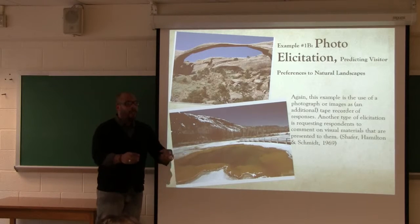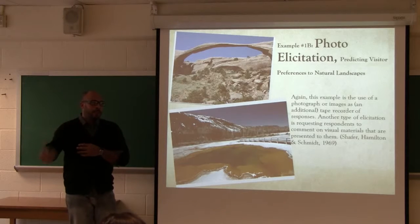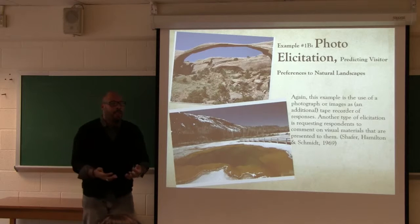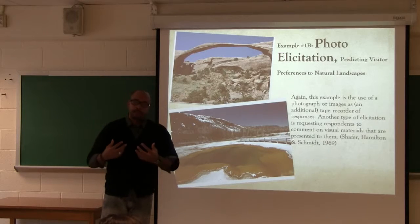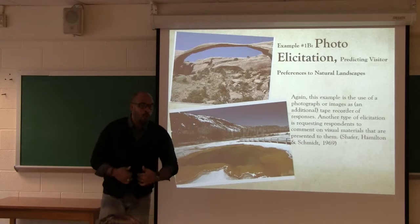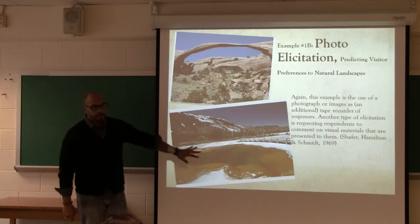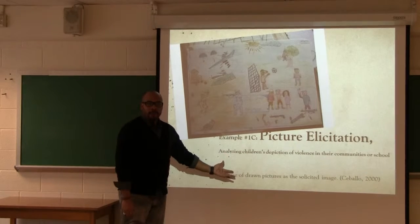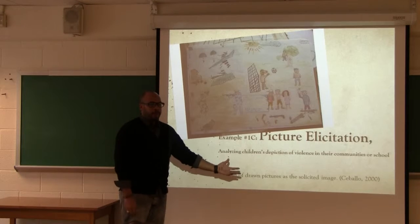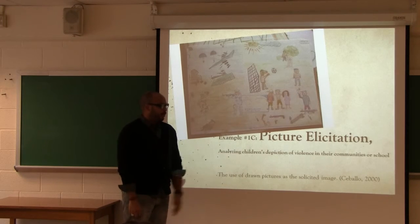So this is another type of photo elicitation. The whole elicitation is the elicitation of responses. Either you elicit responses from photos that the respondents provide — you can ask somebody for their photo album, see how their family has interacted throughout the year — or you can present imagery or photos to them and then elicit the response. Along with photo elicitation, you can also have children or whoever draw you certain things, so it doesn't have to be limited to a photograph. In this case, researchers were looking at analyzing children's depiction of violence.